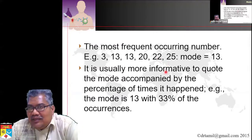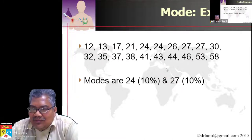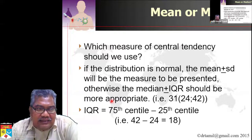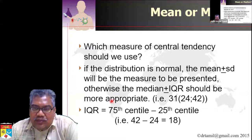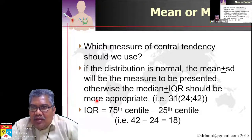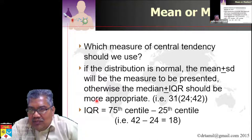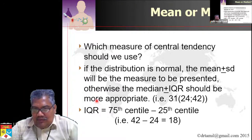Mode is useless — don't bother. As researchers, the only things you need to know are mean and median, and when to use each. When the data is normally distributed, use the mean and standard deviation. When the data is not normally distributed, use the median and interquartile range.